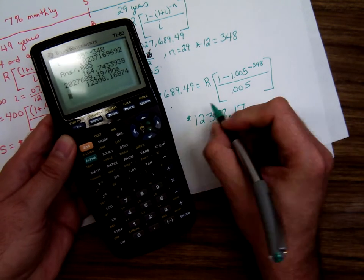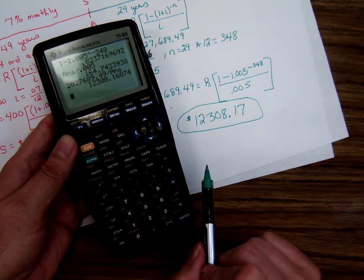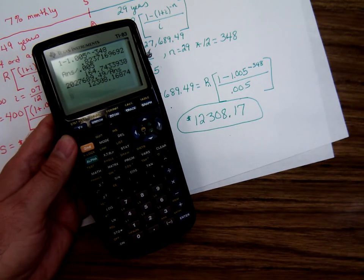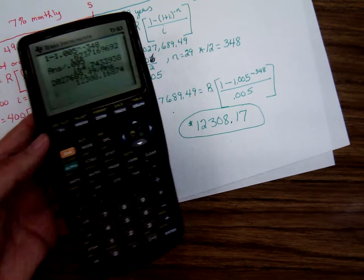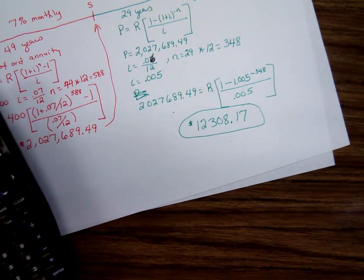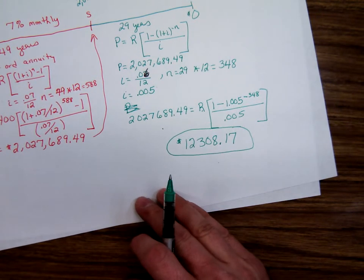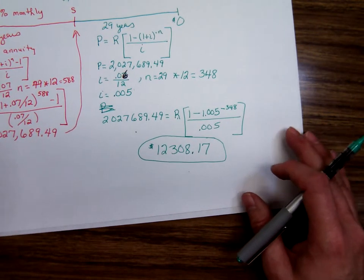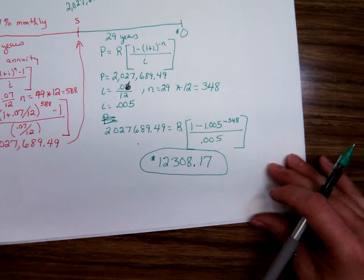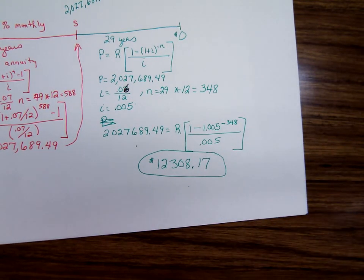So she worked a lot. Saved a lot. And those $400 a month payments for 49 years, she's now going to get to withdraw $12,308.17 a month for 29 years. And at the end of the 29 years, well, maybe she will have saved some more of this. Who knows? She might have some other retirement accounts waiting out there.